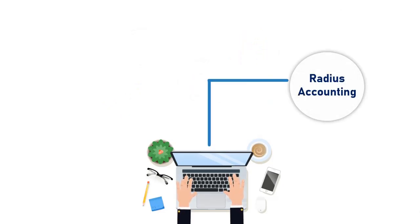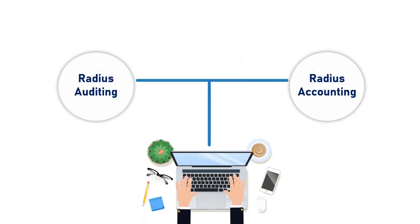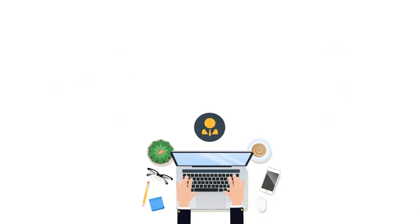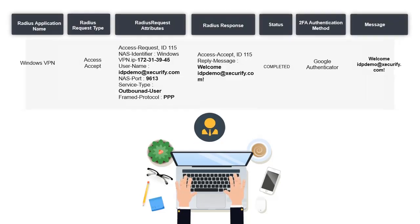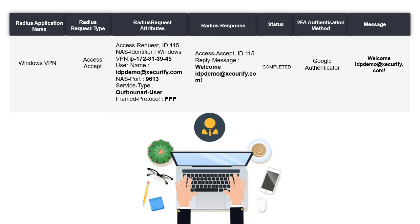Additional features like Radius accounting and Radius auditing are also included in the Mini Orange feature stack. This allows the administrator to keep track of the Windows VPN usage of the users and all of their login events.